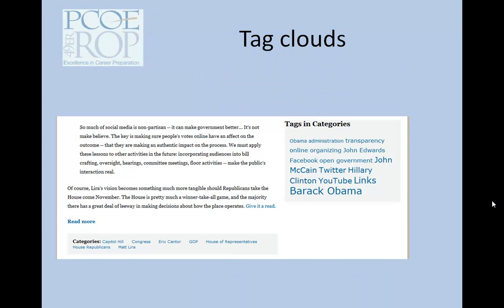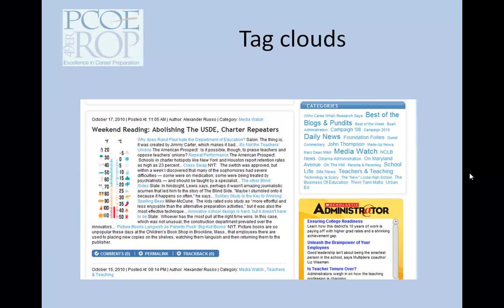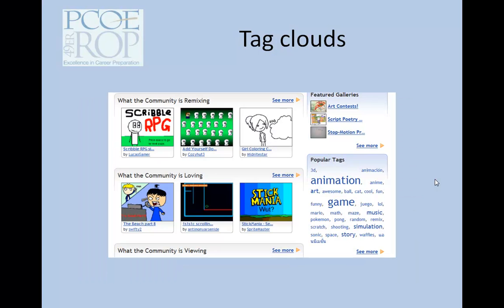Here we have another tag cloud where Barack Obama is the most commonly used tag, and transparency online is a less commonly used tag. Here we have Daily News and Media Watch showing as commonly used tags, with technology is scary as a less commonly used tag. And finally, animation and game are the most commonly used ones, while Pokemon and Mario are less common.